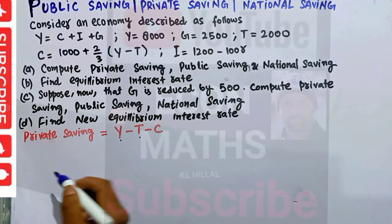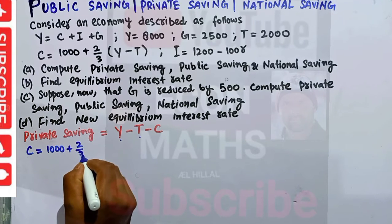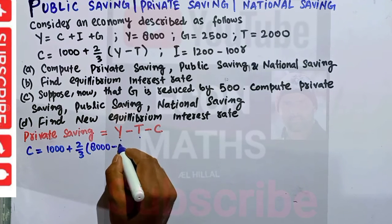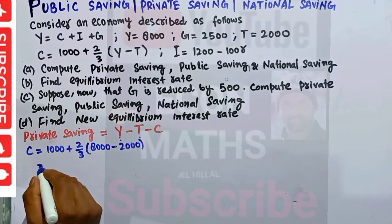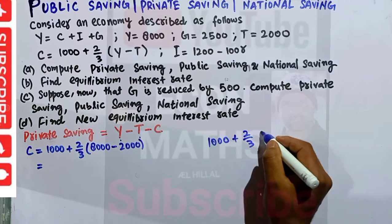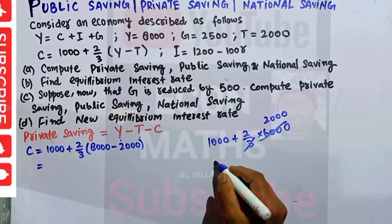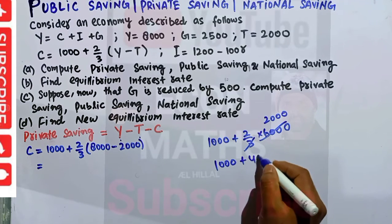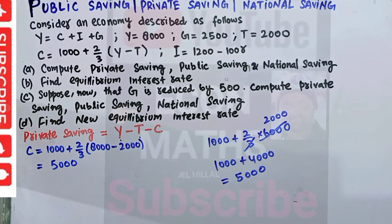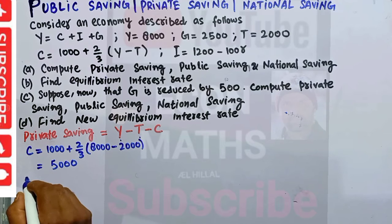Let's calculate C. C equals 1000 plus two-thirds times (Y minus T). Income Y is 8000 and taxes T are 2000, so C equals 1000 plus two-thirds times (8000 minus 2000) equals 1000 plus two-thirds times 6000 equals 1000 plus 4000 equals 5000. So our consumption is 5000.